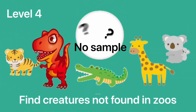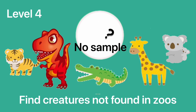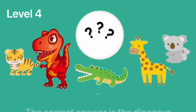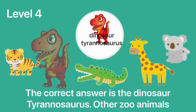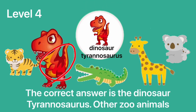Level 4. Find creatures not found in zoos. The correct answer is the dinosaur Tyrannosaurus. Others are animals.